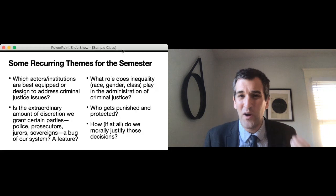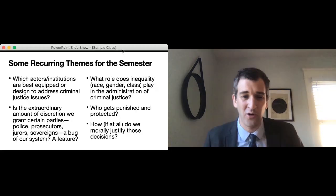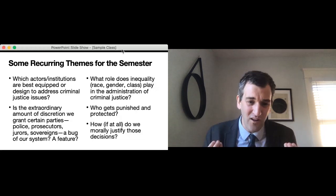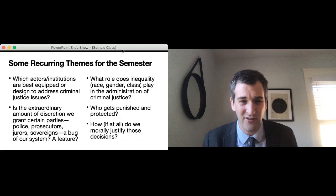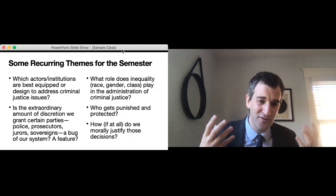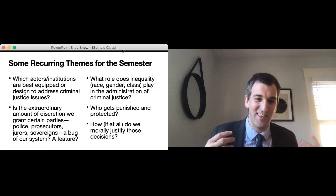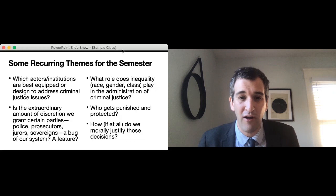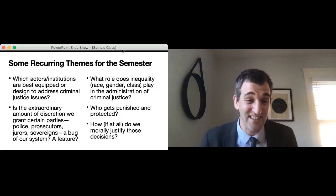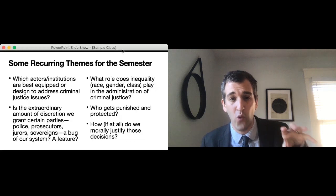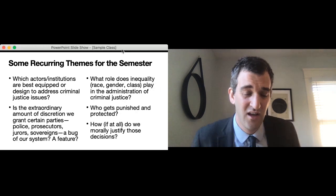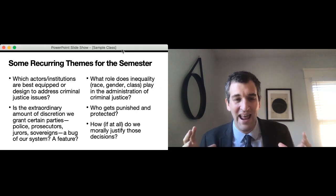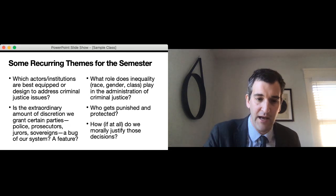We're going to be asking which actors or institutions are best equipped to deal with criminal justice problems. We're going to learn that the criminal justice system is full and suffused with discretion on the part of different actors, whether that's cops, whether that's prosecutors, jurors, or even sovereigns who can grant pardons. I want you to be asking whether you think that that is a problem, if it's a bug or a feature of the system. It is impossible to talk about criminal law without talking about inequality, without race, gender, class, and different axes of oppression. And I want to talk about the ways in which those affect the administration of criminal justice. And then, writ large, we have some very big questions about who gets punished, who gets protected, and how we justify whether somebody gets punished or not.